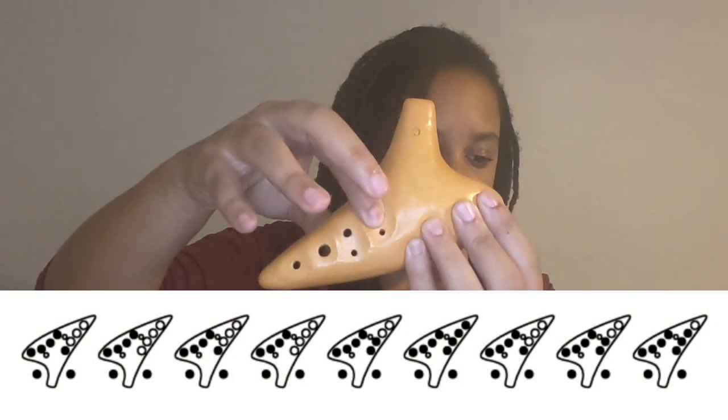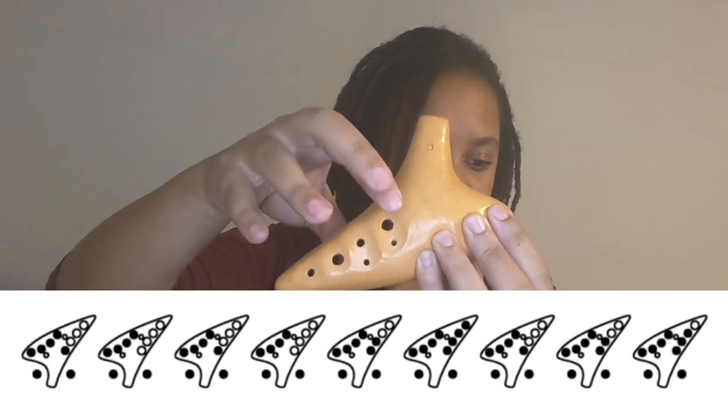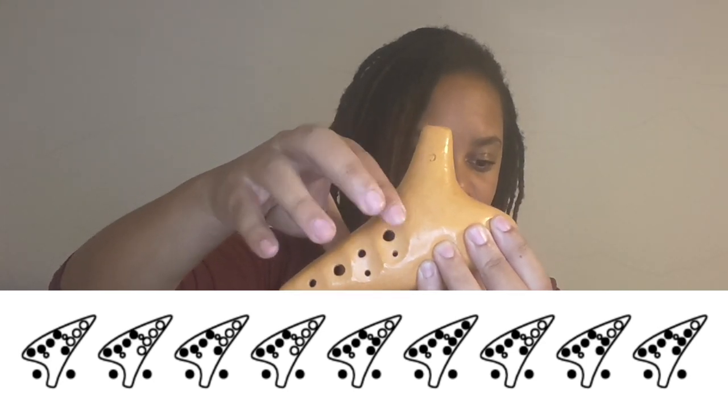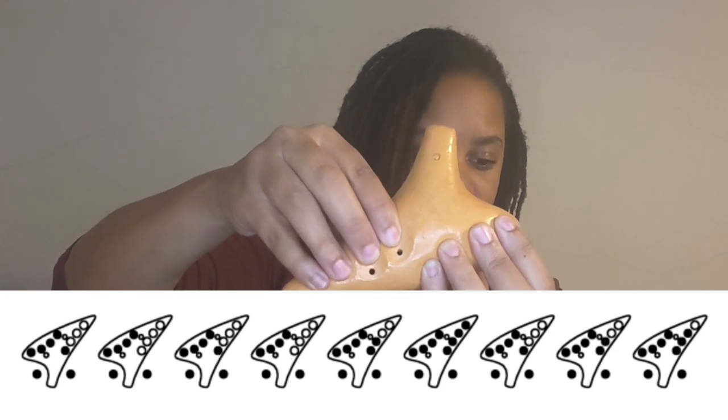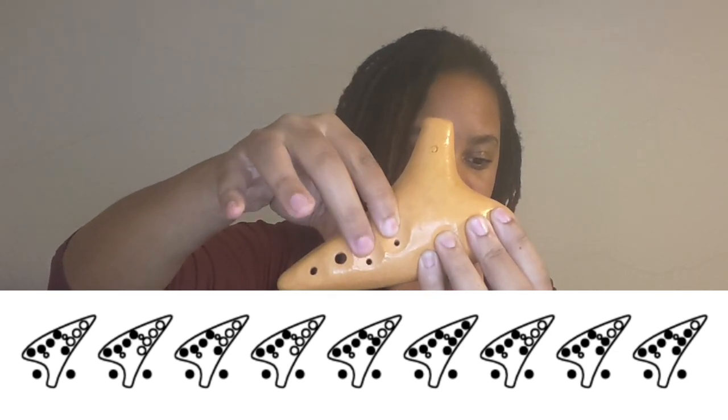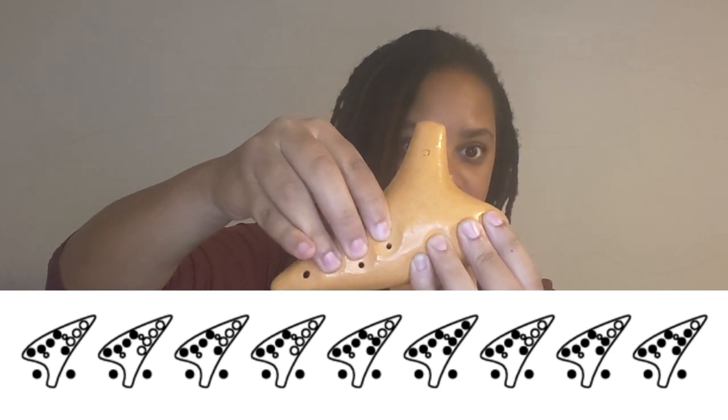Now let's move on to the last section. In this section, we need F, G, F, G, E, C, F, E, D. What does that sound like? That's what that section sounds like. Go ahead, pause here and practice that.